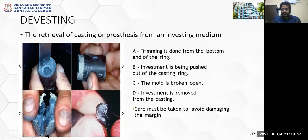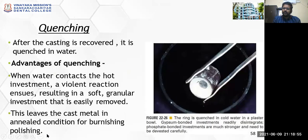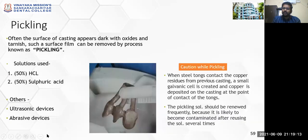As seen in the video, the entire process was explained comprehensively. Once casting is done, devesting is the retrieval of your casting or prosthesis from the investment medium. Care should be taken to avoid any damage to the margins when removing the prosthesis from your investment. Once removed, it is preferably quenched in water — when water contacts the hot investment, any violent reaction is easily handled, and this leaves the cast metal in an annealed condition for burnishing and polishing.